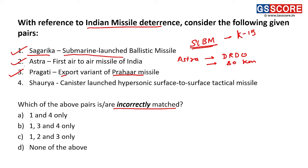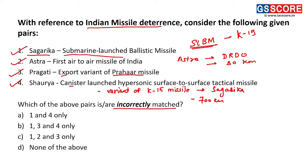Fourth pair is Shaurya, described as a canister-launched hypersonic surface-to-surface tactical missile. This statement is also correct. Shaurya is a variant of the K-15 missile, which is Sagarika. So Shaurya is a variant of Sagarika and is indeed a hypersonic surface-to-surface tactical missile. All four pairs are correctly matched, but we are supposed to find incorrectly matched pairs. None of them is incorrect, so the answer is D — none of the above.